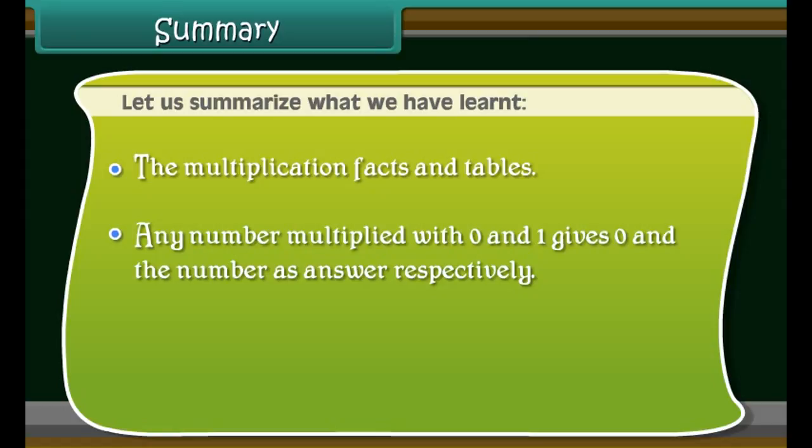Let us summarize what we have learned. The multiplication facts and tables: any number multiplied by 0 gives 0, and any number multiplied by 1 gives the same number. Multiplication with 10 and its multiples is an easy 2-step process.